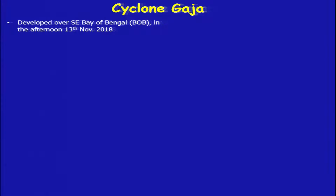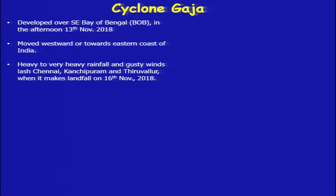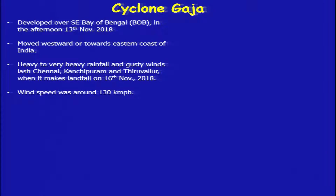Cyclone Gaza developed over the southeast Bay of Bengal — part of the Indian Ocean — in the afternoon of 13 November 2018, and moved westward towards the east coast of India. Heavy to very heavy rainfall and very high wind speed affected areas like Chennai, Kanchipuram and Tiruvallur when it made landfall on 16th November. Wind speed was around 130 kilometers per hour and it killed around 46 people in Tamil Nadu and Andhra Pradesh.